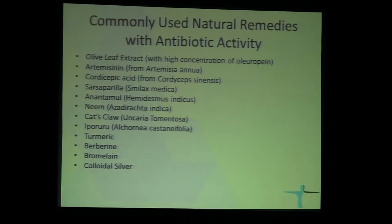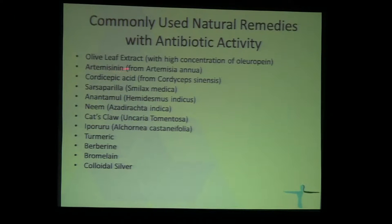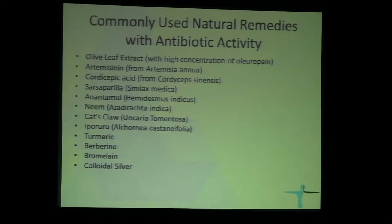These are the most commonly used natural remedies with strong antibiotic activity in our practice: olive leaf extract, artemisinin — now available in pure form in the United States — cardisvic acid, extract from Smilax, cat's claw, iperuru, turmeric, berberine, bromelain, and colloidal silver. This list can go on and on, but these are the most popular products in our clinic.